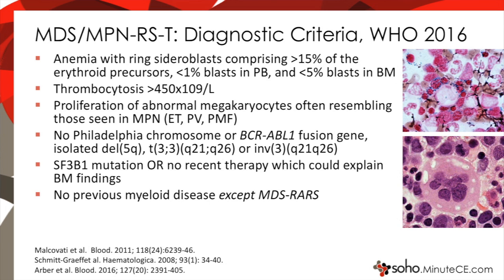Patients with MDS-MPN-RST, previously known as RARS-T, should not have leukoerythroblastosis and should have less than 5% blasts in the blood. In addition, thrombocytosis is usually marked at greater than 450,000 cells. There is proliferation of abnormal megakaryocytes, similar to those seen in MPNs, as seen here in the bottom right panel, and the SF3B1 mutation is common — seen in as many as 75% to 80% of cases. Notably, a previous diagnosis of MDS with refractory anemia with ring sideroblasts can transform into MDS-MPN-RST, making this the only overlap syndrome in which a preexisting myeloid condition is allowed.